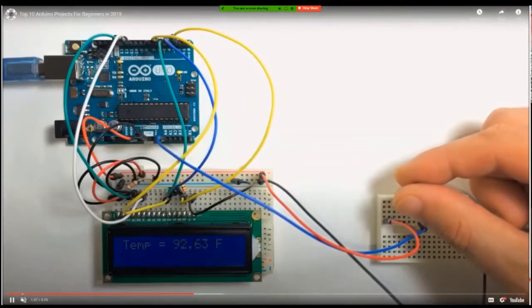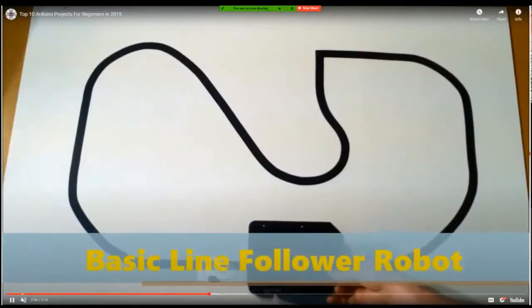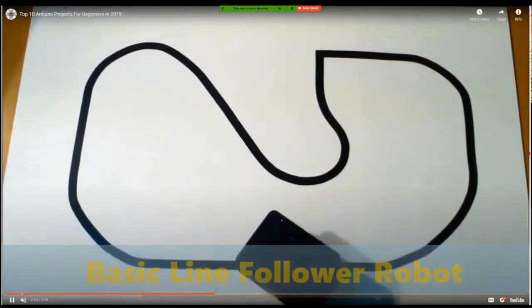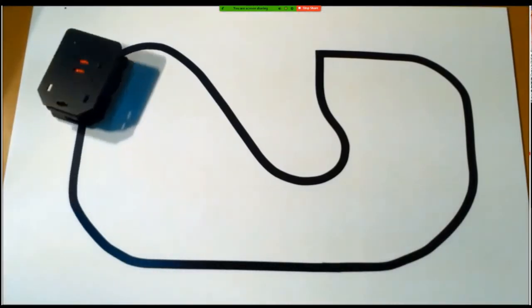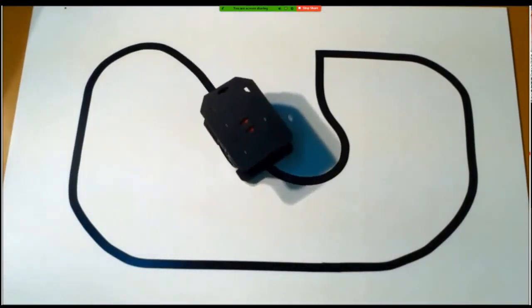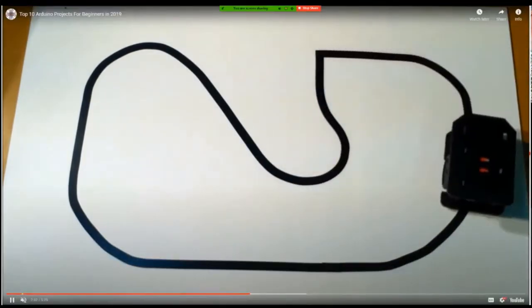So you can see as a person squeezes this temperature probe, the temperature increases. Oh, and this is also a very classic example. It's a line following robot. So it looks at the line marking and it makes sure to drive and keep the line between its wheels. And it works quite well.